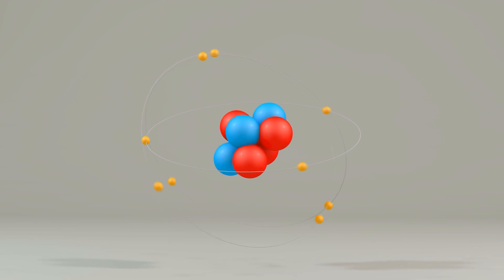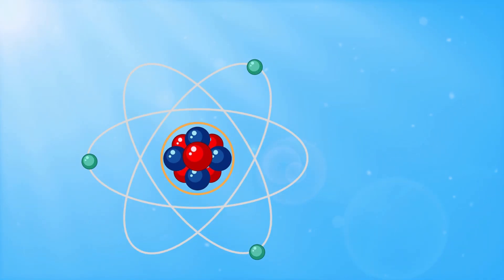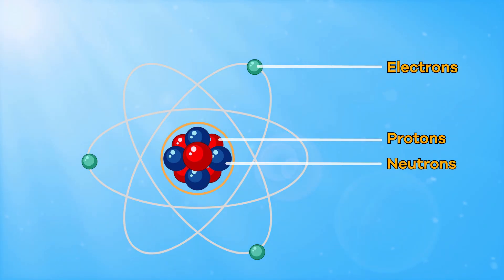Let's take a closer look at the structure of an atom. Atoms have three parts: protons, neutrons, and electrons.